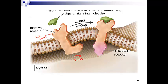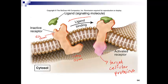Now this receptor, because it's in the cytoplasm, can target cellular proteins. At some point, based on the affinity of the signal to the protein, that signal is released. The protein goes back to its original state, and now that protein is in the off position, no longer able to target and initiate a cellular response.